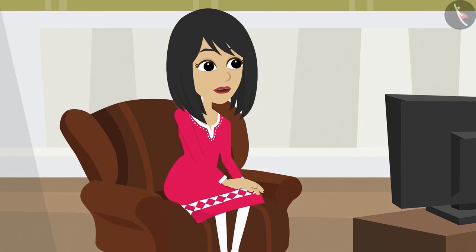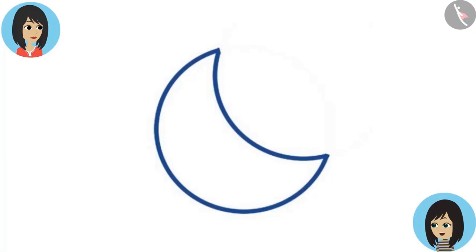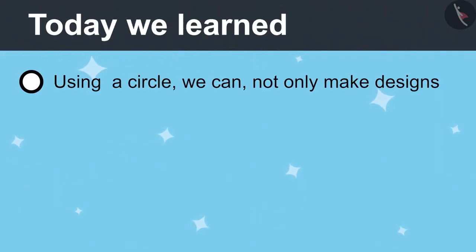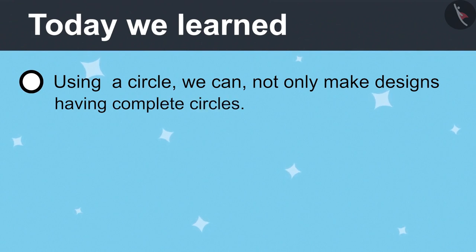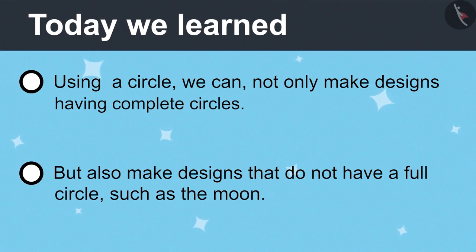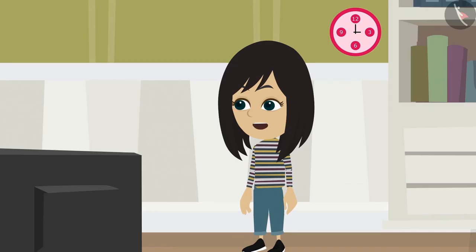You have become very intelligent. Thank you. But you see that no full circle is visible in this shape, yet it is a shape made from a circle. This means using a circle, we cannot only make designs having complete circles like rangoli, but also make designs that do not have a full circle, such as the moon. Tomorrow, Vandana and I will together try to find designs made with many circles. Bye.